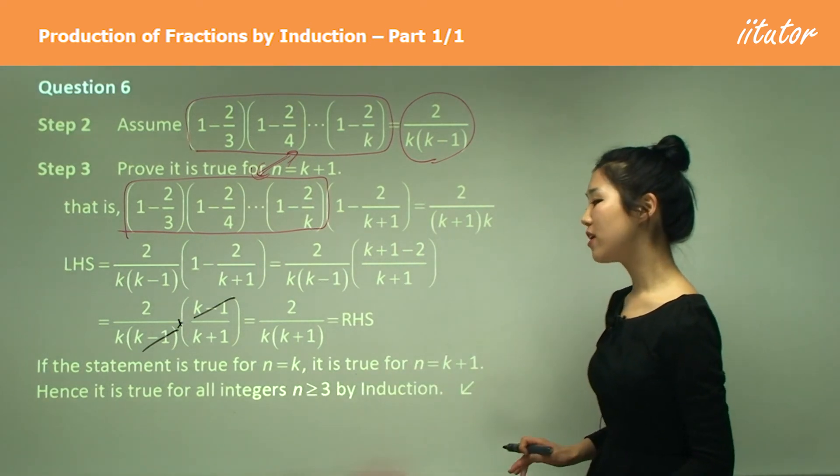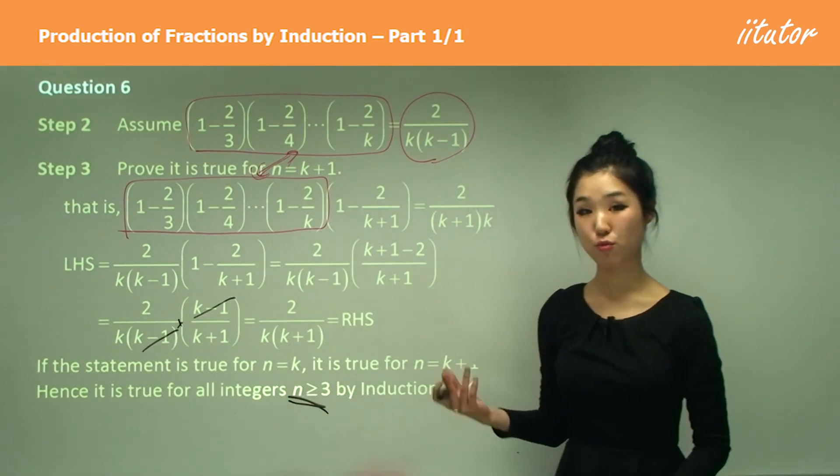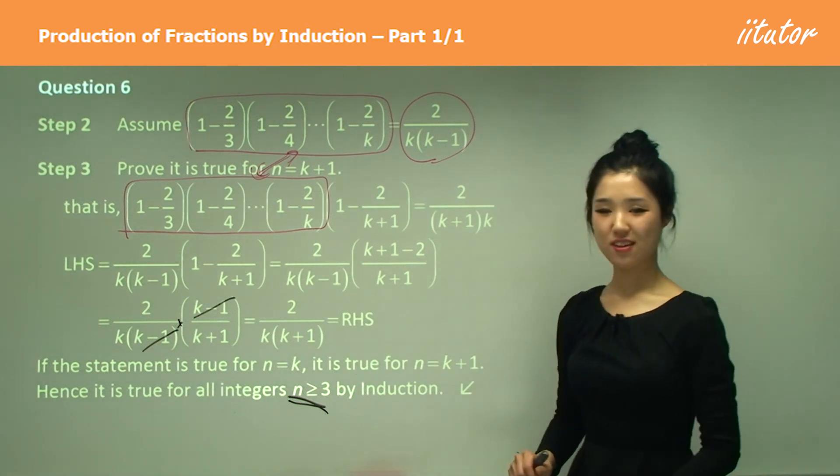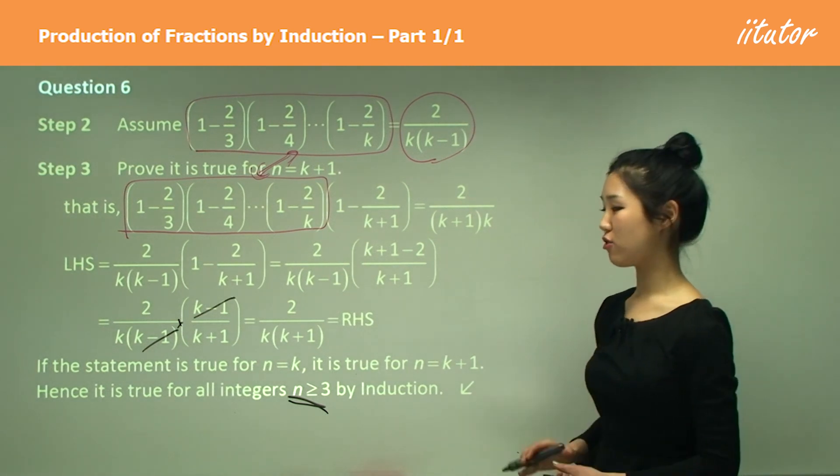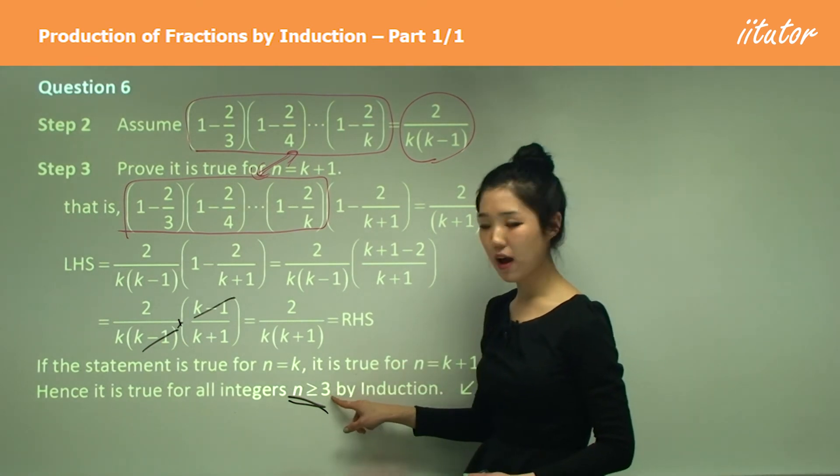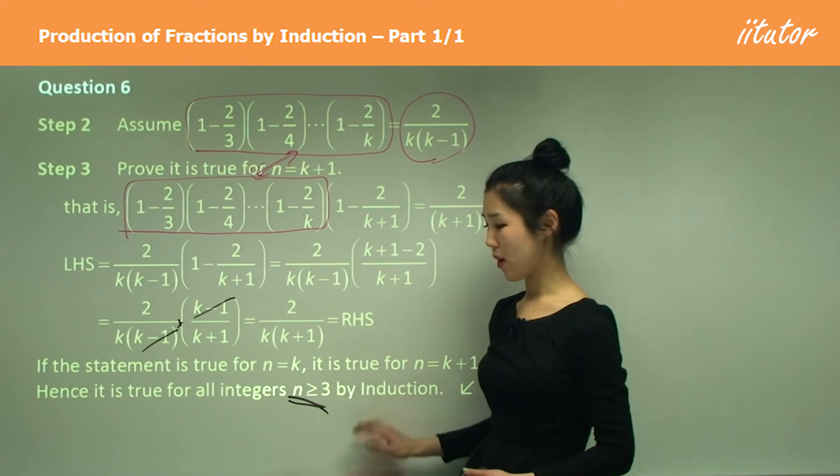So it's true for all integers n is greater than or equal to 3. Make sure you don't habitually write 1 by the use of induction. And that's our conclusion. So make sure you don't forget to write the conclusion. But again, make sure you change this part to n is greater than or equal to 3, not 1.